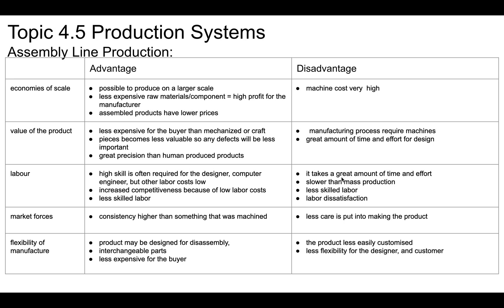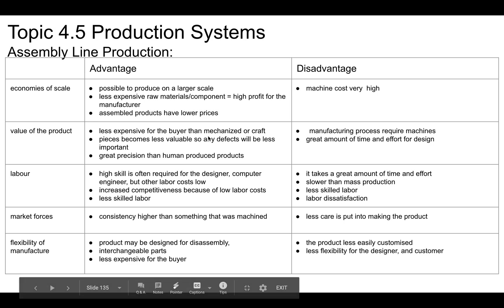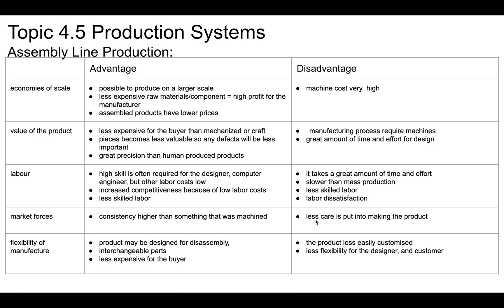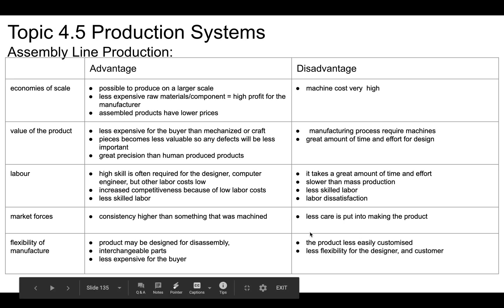There's not a lot of pride of work. This is slower than mass production, but still has a high rate of production. There's less care making the product, but consistency can be higher. Similar to the last one, it's less easily customizable — less flexibility for the designer and the customer — but the products can be designed for disassembly. There are interchangeable parts and things are cheaper for the buyer.